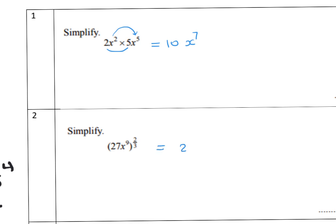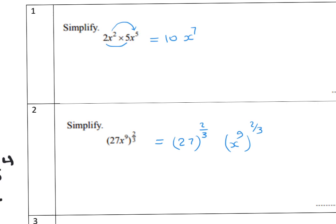For problem 2: simplify 27^(2/3) times x^9 all to the power 2/3. Distribute the power. For 27^(2/3), this means the cube root of 27 squared — using a calculator, the answer is 9. For x^9, since we have a power of a power, multiply: 9 times 2/3 equals 6. So the answer is 9x^6.